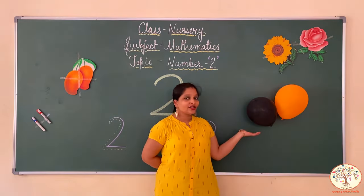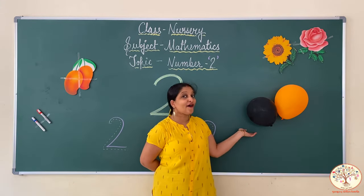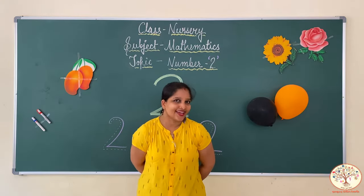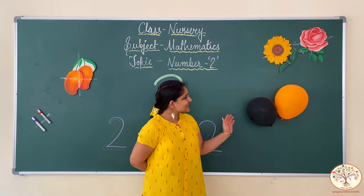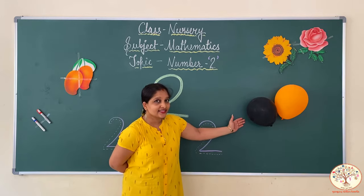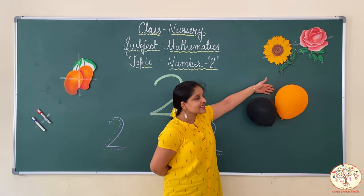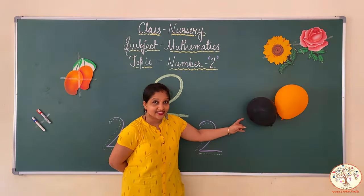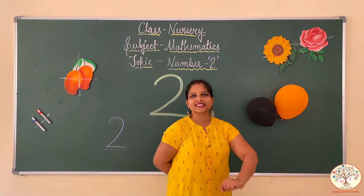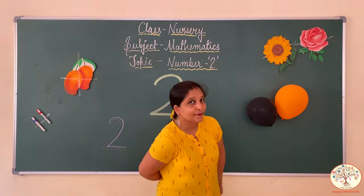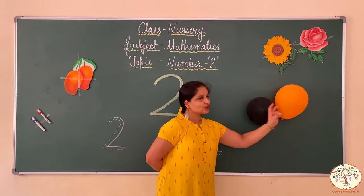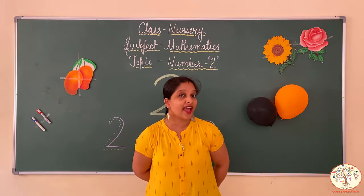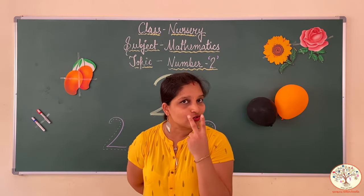What are these? These are balloons. Kids, do you like balloons? I also like balloons. One is black in color and the other one is orange in color. How many balloons? 1, 2. I have 2 balloons.